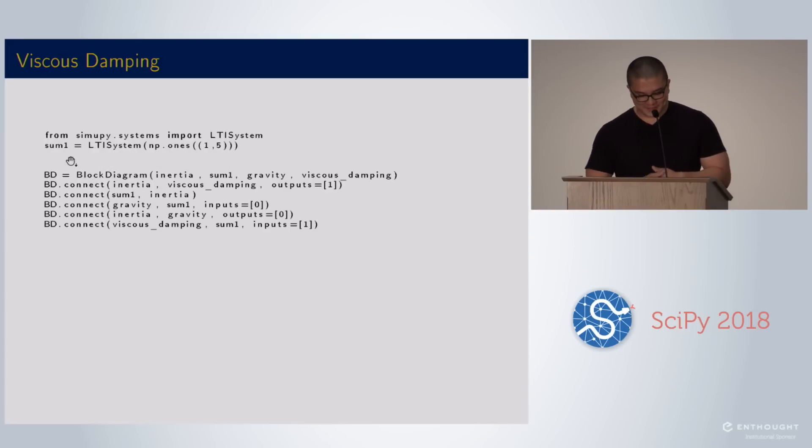Luckily I know someone who can help us. I can create a summing system using a linear time invariant system. It's just a helper function that makes it easy to create systems using matrices, numpy matrices. By creating a one by five gain matrix, the result is that it sums the five possible inputs. Unfortunately right now, SimuPy does not resolve the flow order. So if I added the summer to the block diagram, it would never actually see the outputs of the other systems. I need to create a new block diagram in an order that will resolve correctly. So I do inertia, the summer, gravity and viscous damping.